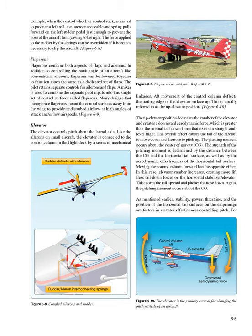The elevator controls pitch about the lateral axis. Like ailerons on small aircraft, the elevator is connected to the control column by mechanical linkages. Aft movement of the control column deflects the trailing edge of the elevator upward—the up elevator position—decreasing elevator camber and creating a downward aerodynamic force greater than the normal tail-down force in straight and level flight. This causes the tail to move down and the nose to pitch up, with the pitching moment occurring about the center of gravity (CG). The strength of the pitching moment is determined by the distance between the CG and the horizontal tail surface, as well as by the aerodynamic effectiveness of that surface.